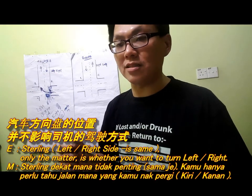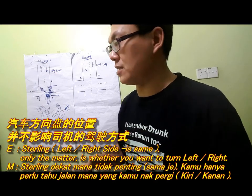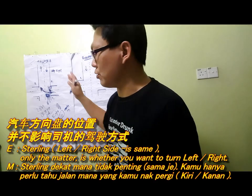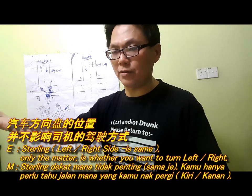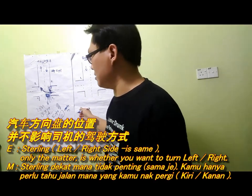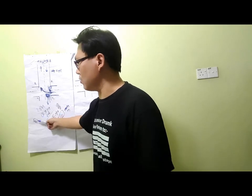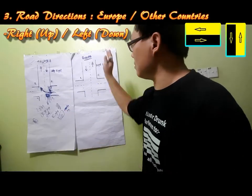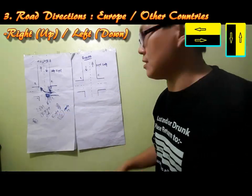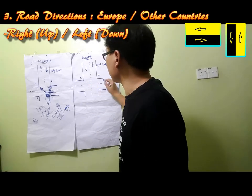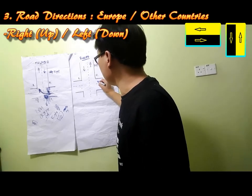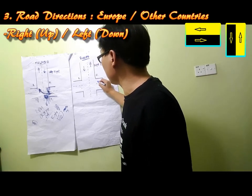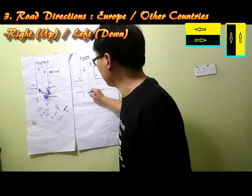The main point is you still follow the rules of your country — that's the only simple method you can apply. Same goes for Europe or other countries. For example, the road direction there is reversed. If someone wants to cross the road, the signal goes on the other side accordingly.